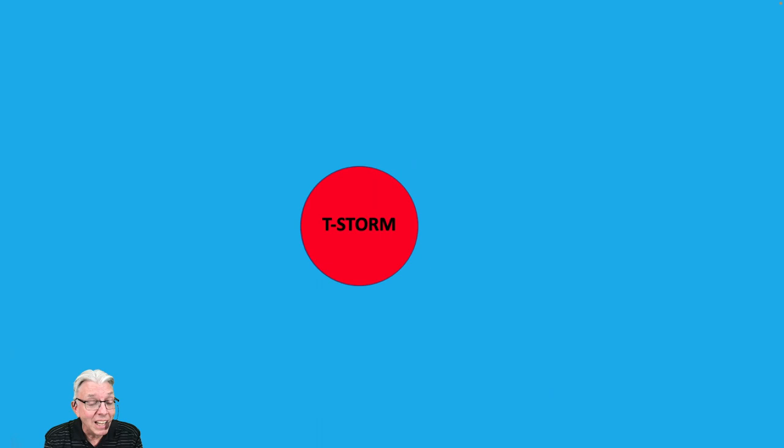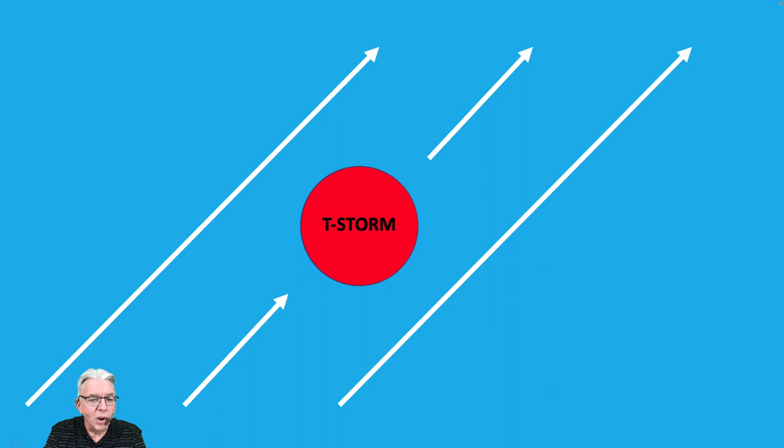Because that water that's on your skin is evaporating, and that process is extracting heat from your body or from the air around you, and so you feel chilly. So the rain falls into this relatively dry air. It evaporates. That cools the air. That cold air now begins to accelerate toward the ground. And when it hits the ground, it can't keep going, so it has to spread out.